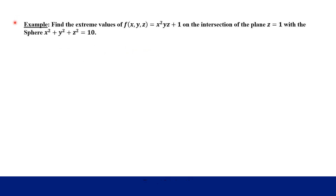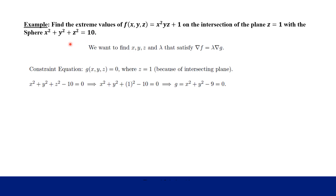Our example says to find the extreme values — meaning maximum and minimum — of the function x² · y · (z + 1). The constraint is the intersection of the plane z = 1 with the sphere x² + y² + z² = 10. We combine these two constraints using substitution: plugging z = 1 into the sphere equation and subtracting 10, giving us G: x² + y² − 9 = 0.